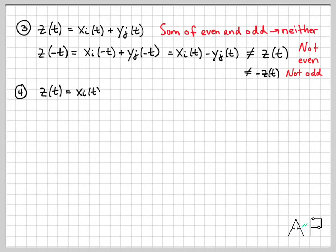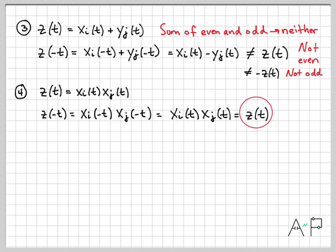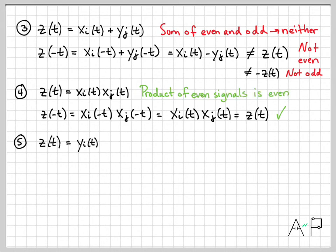Property four: if I take an even signal times an even signal, z(t) = xi(t) · xj(t). Then z(-t) = xi(-t) · xj(-t). Since both are even, that equals xi(t) · xj(t) = z(t). So z(t) = z(-t), meaning this is an even signal — a product of even signals always results in an even signal.